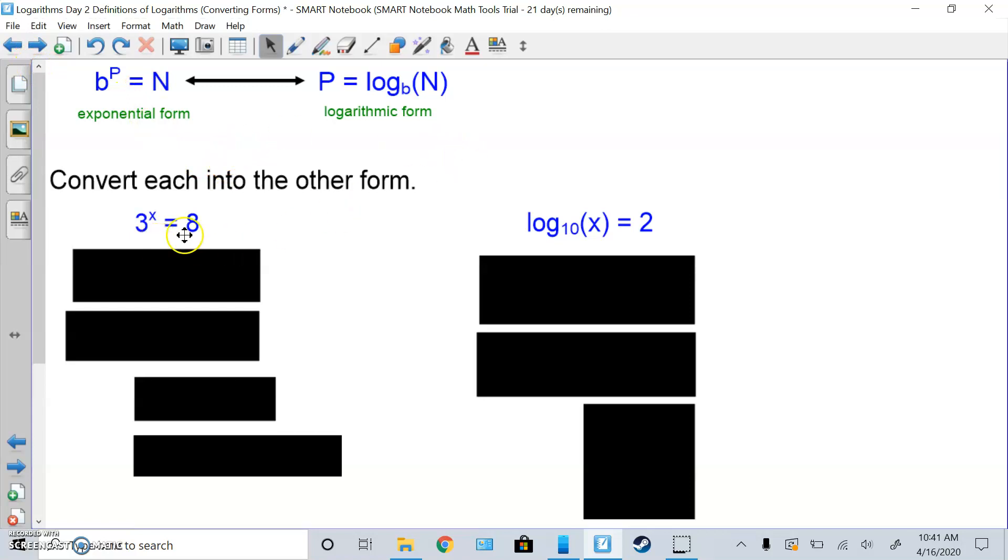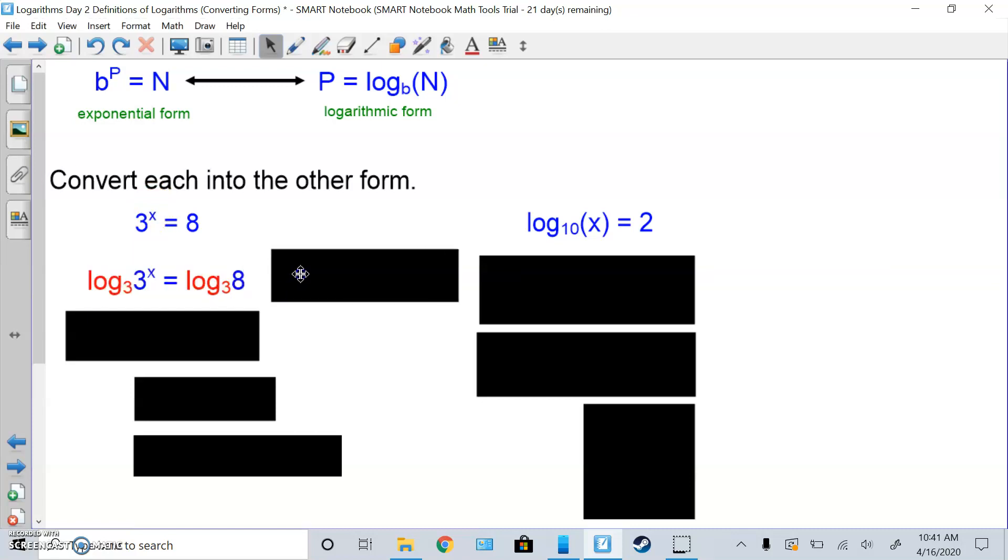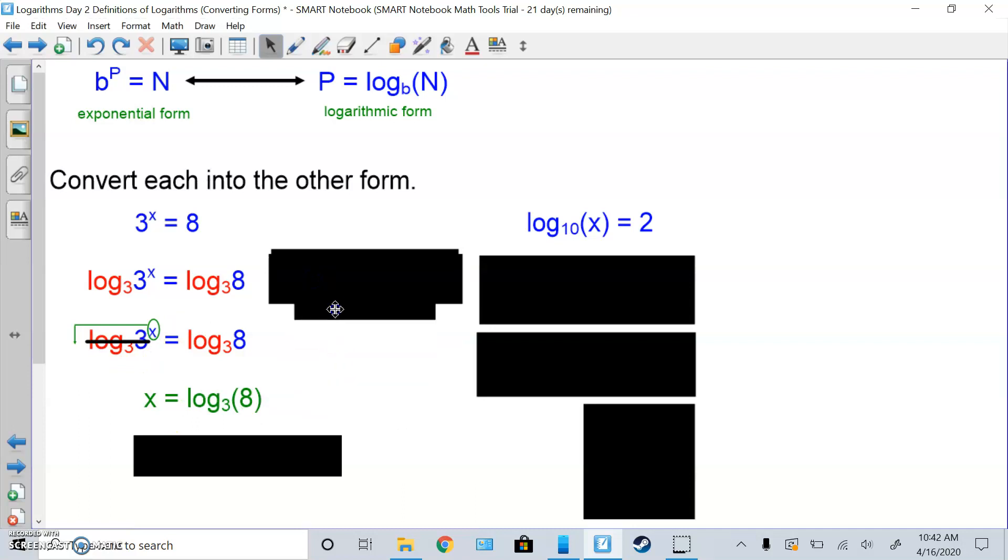Convert each to the other forms. So here's the problem from the beginning of the presentation. 3 to what power equals 8. So you can use any method you want. You can label the letters and fill in the formula or I'm going to do the solving one. Because I want to get rid of this exponent, I'm going to take a log of both sides. I'm going to log base 3. So that's the first step, log base 3 both sides. Then I notice log base 3 of 3 will cancel out and the exponent x will drop down in front.